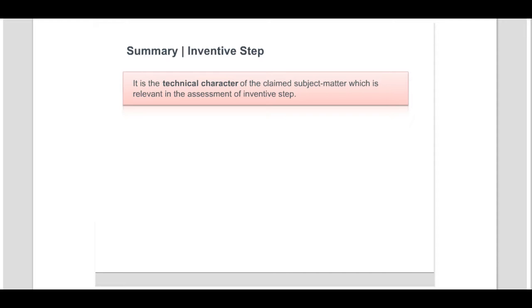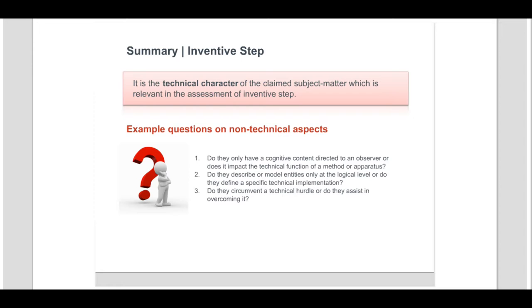To recap what we have previously explained, it is the technical character of the claimed subject matter which is relevant in the assessment of inventive step. In general, we look to see whether any non-technical aspect combines with the clearly technical aspects to cause a technical effect. Here are some examples of questions we may ask with respect to the non-technical aspects: do they only have a cognitive content directed to an observer, or does said content impact the technical function of the method or operators defined in the claim? Do they describe or model entities only at the logical level, or do they define a specific technical implementation? Do they circumvent a technical hurdle, or do they assist in overcoming it?